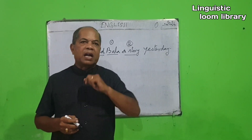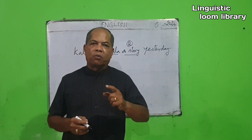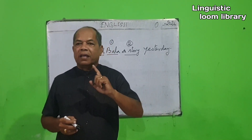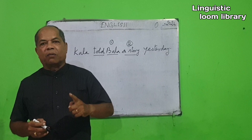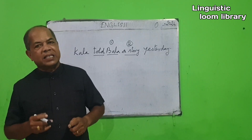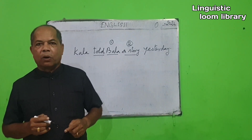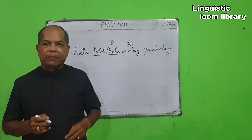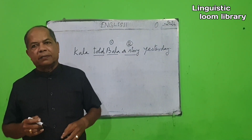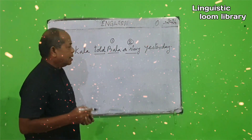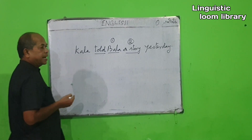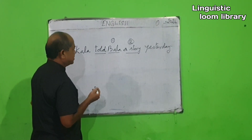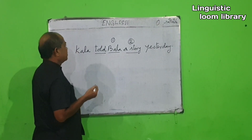This is the way that you should find out the direct object and indirect object in a sentence. Let us now find out the direct and indirect object in this sentence itself.